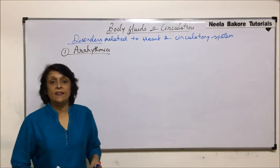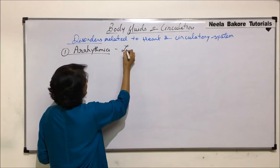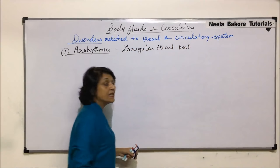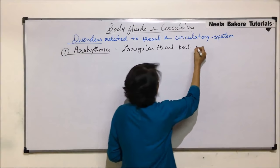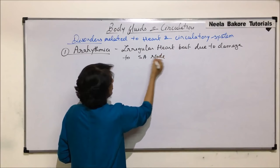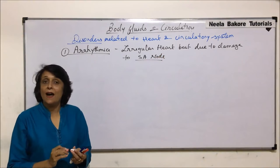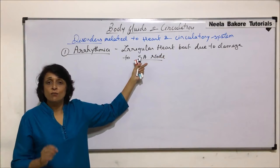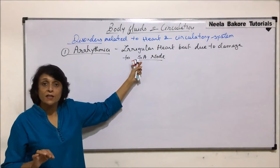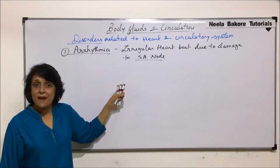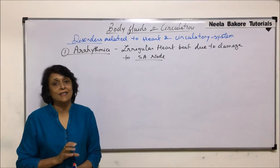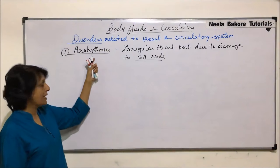Arrhythmia means irregularity in the heartbeat — an irregular heartbeat — and this is normally due to damage to the SA node. The SA node is the natural pacemaker of the heart, where the impulse for the heart to contract is generated in a rhythmic manner, maintaining a regular heartbeat. If something goes wrong with the SA node, rhythmic contraction does not take place, and whenever this rhythm breaks, that is known as Arrhythmia.